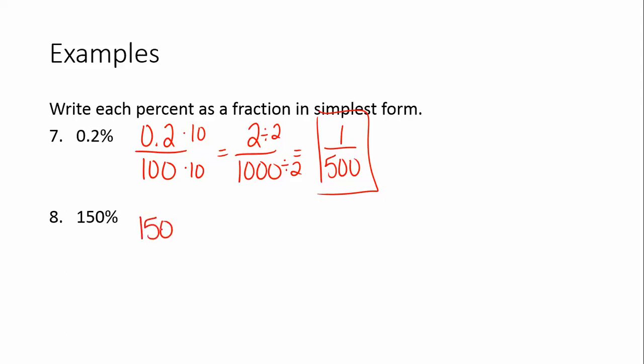150 percent, we put it over 100. I know 50 goes into both. So we're going to divide them both by 50. 150 divided by 50 is 3. 100 divided by 50 is 2. So 150 percent would be, in a fraction, 3 halves. And you can change it to a mixed number, but you don't have to. If you changed it to a mixed number, it would be 1 and a half. Or excuse me, it would be 1 and a half in a fraction.